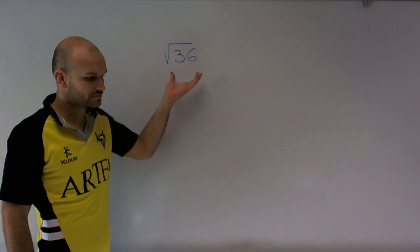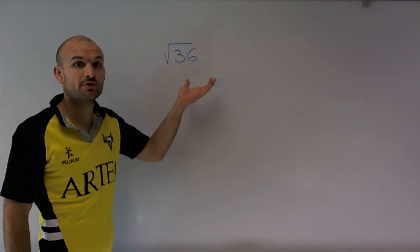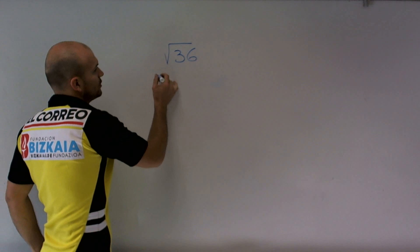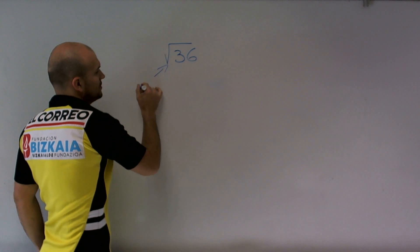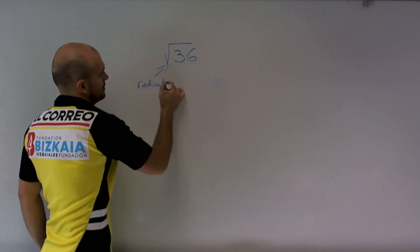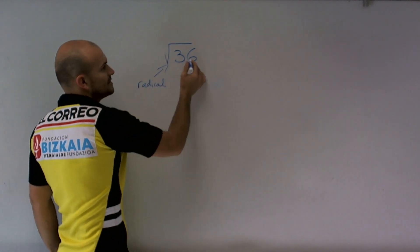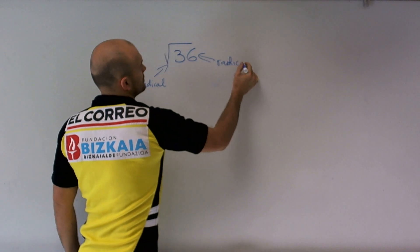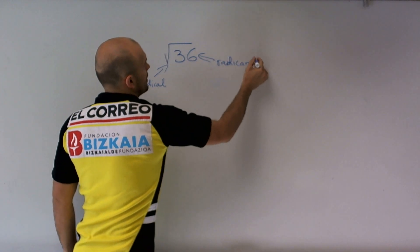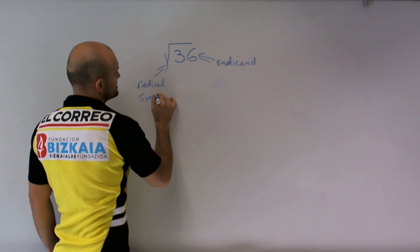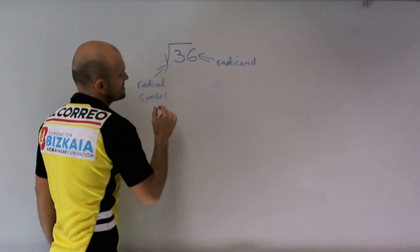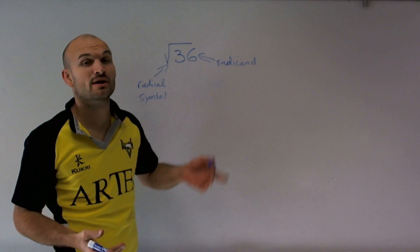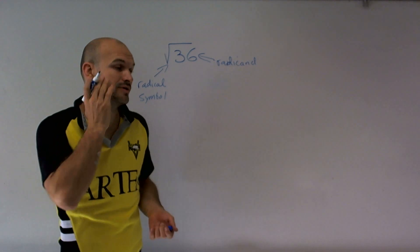This is what we call a square root or a radical, where we have what we call the radical symbol. And here's what we call the radicand. So it's important for us to understand what the radical symbol means and what does the radicand really represent.